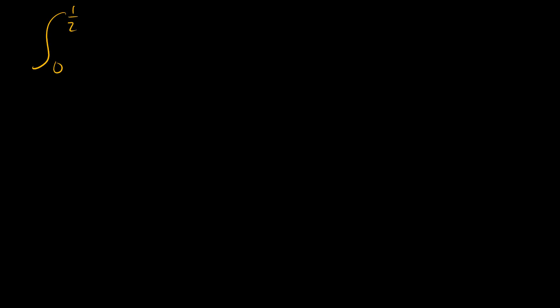Our problem is the definite integral from x equals 0 to one half of x sine of x over square root of 1 minus x squared.